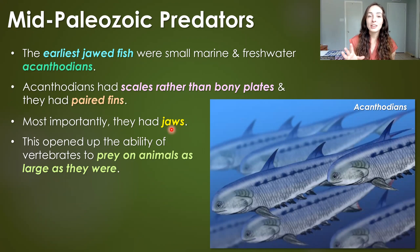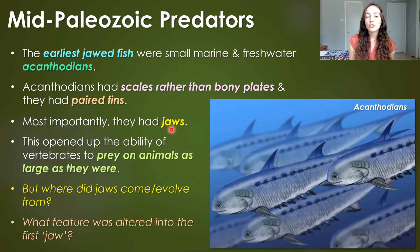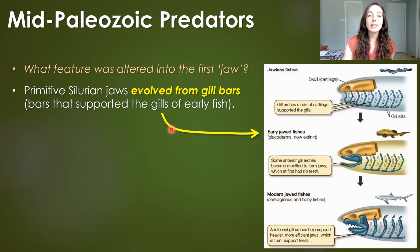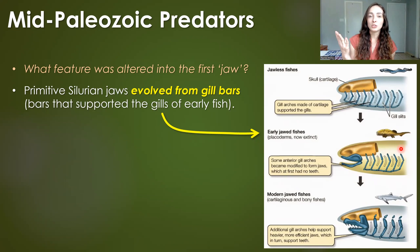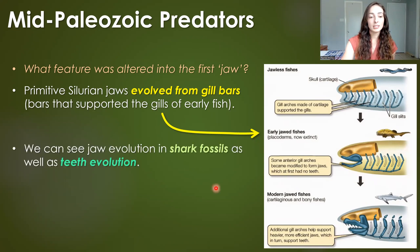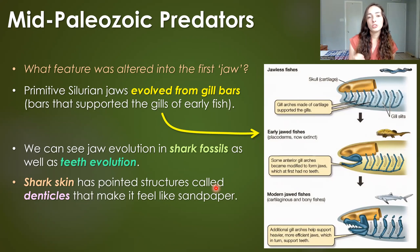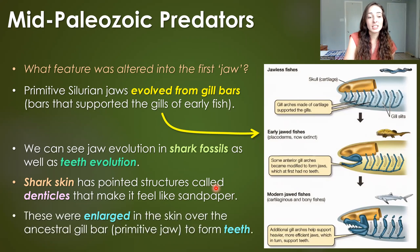The evolution of jaws opened up the ability of vertebrates — fish in this case — to prey on animals as large as themselves. Primitive Silurian fish jaws evolved from gill bars, the bars that supported the gills of early fish. We can see how those gill bar skeletal elements adapted into folding into jaw bones, and eventually teeth evolved. Shark skin has pointed structures called denticles that make it feel like sandpaper, and these were actually adapted into teeth — enlarged in the skin over the ancestral gill bar to form teeth.